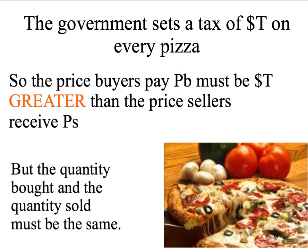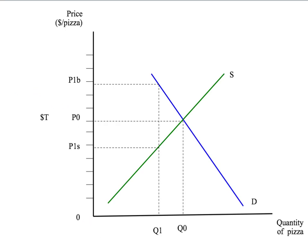We used the example of the pizza market, and in particular we considered what would happen if there was a $2.50 tax on pizzas — that's our T dollars — which the government says is a tax on every pizza. That meant that the price buyers paid had to be $2.50 greater than the price sellers received. Because trade is voluntary, the quantity bought had to equal the quantity sold, giving us our new equilibrium where the gap or wedge of T dollars between the buyer price P1B and the seller price P1S is exactly equal to T dollars.